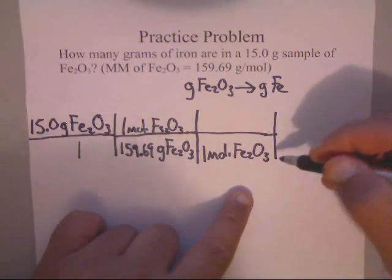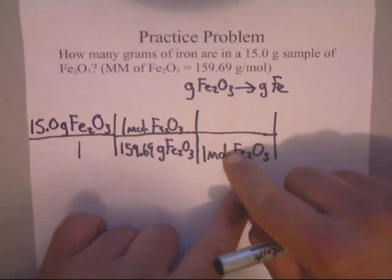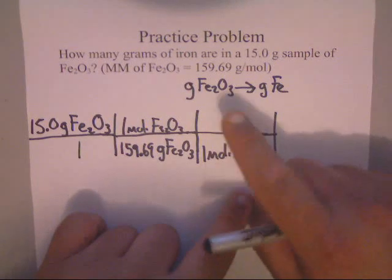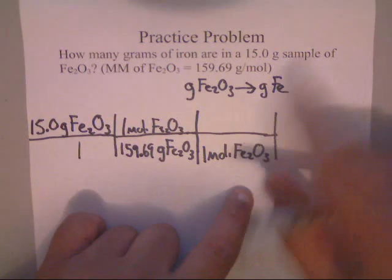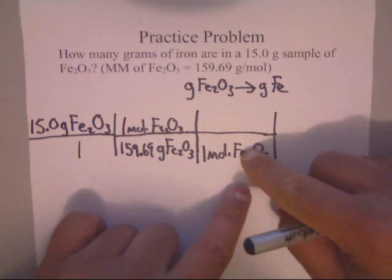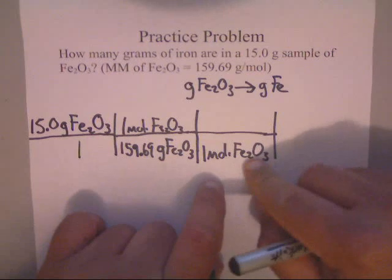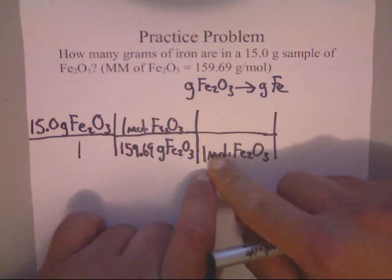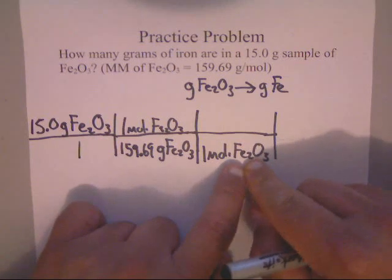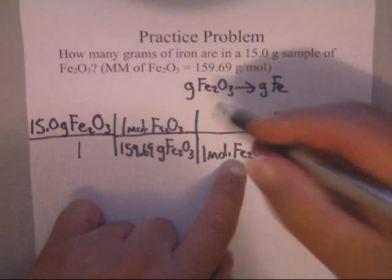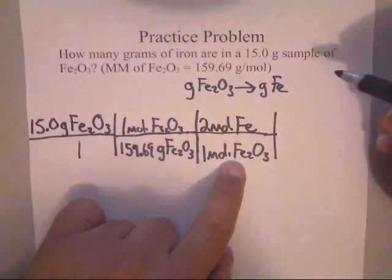This molar ratio that we're about to do allows us to switch between different things. If we had a balanced equation we could switch to a different compound, but luckily we just have this formula and we're wanting to go from Fe₂O₃ to just talking about iron. How many irons are here? That's right, there's two, so that's two moles of Fe.